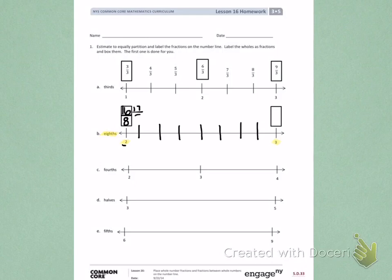17 eighths, 18 eighths, 19 eighths, 20 eighths, 21 eighths, 22 eighths, 23 eighths, and 24 eighths. There is a box around 24 eighths, because it is a whole number.